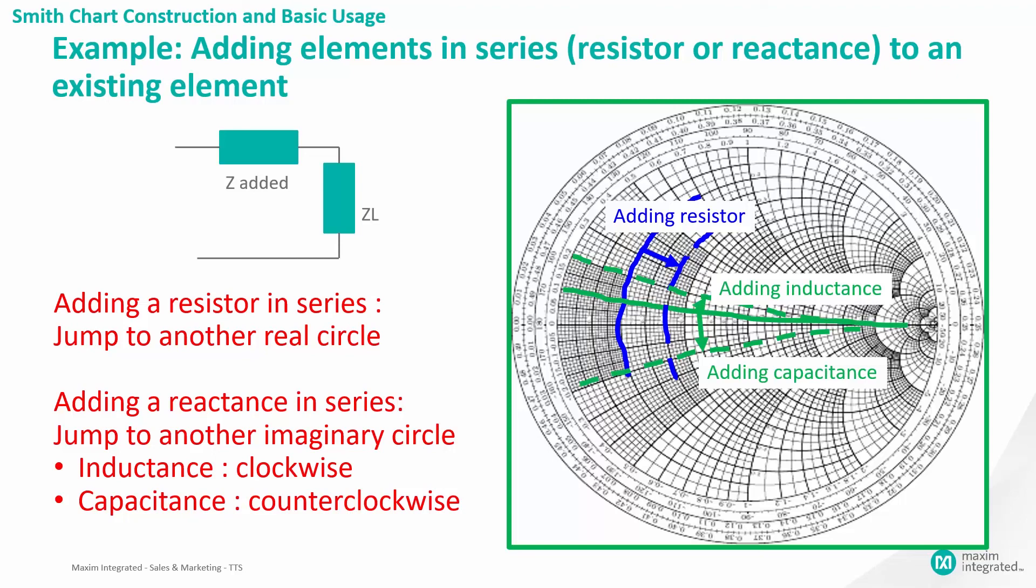Adding an element in parallel requires to work with the conductance and admittance. In the Smith chart, this can be done by rotating by 180 degrees from the current point. We can use these tactics to try and move the load impedance as close to the center of the circle as possible.